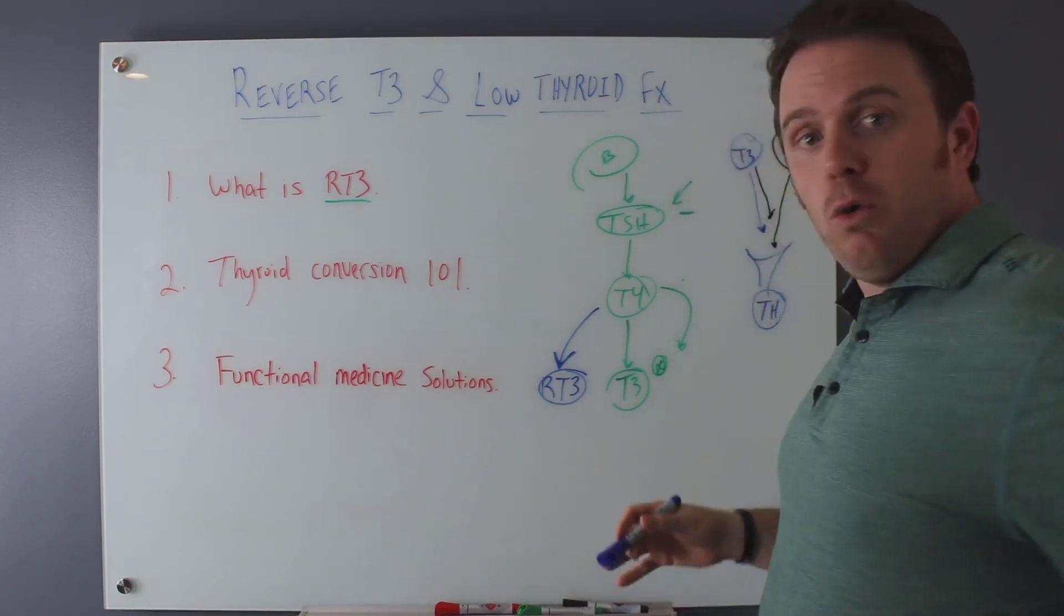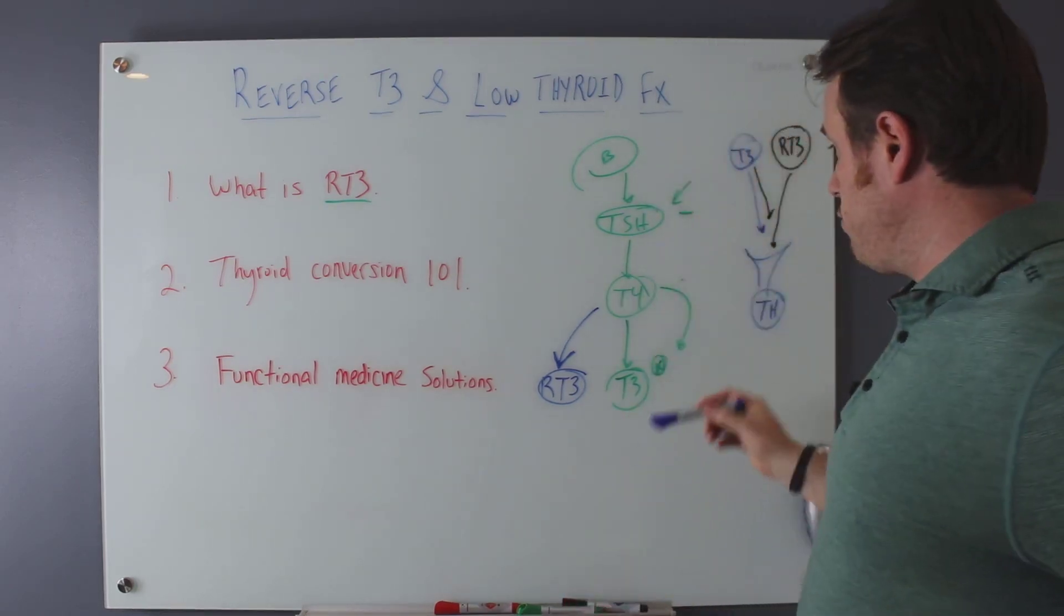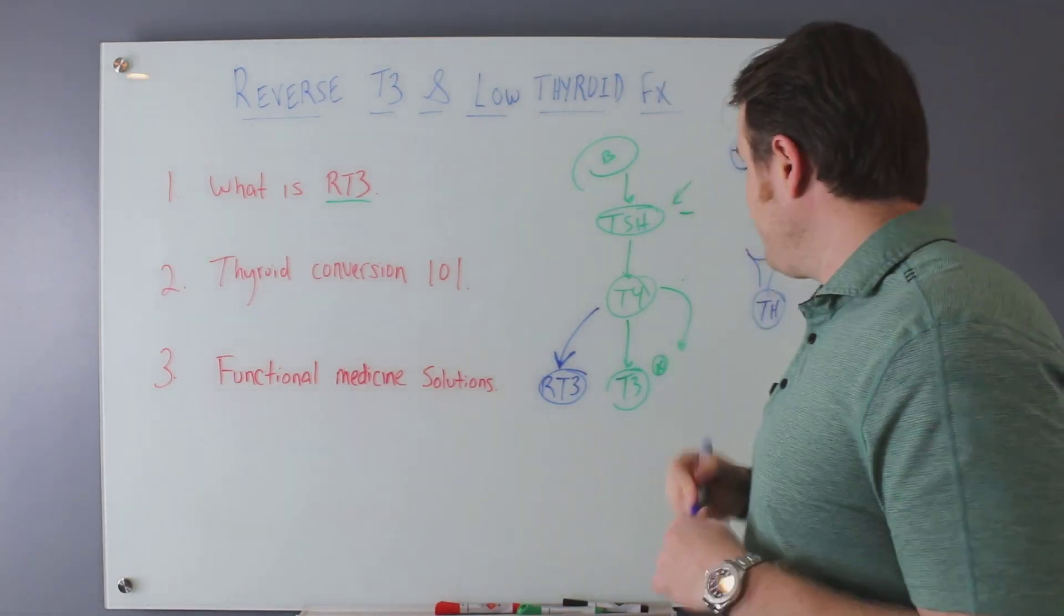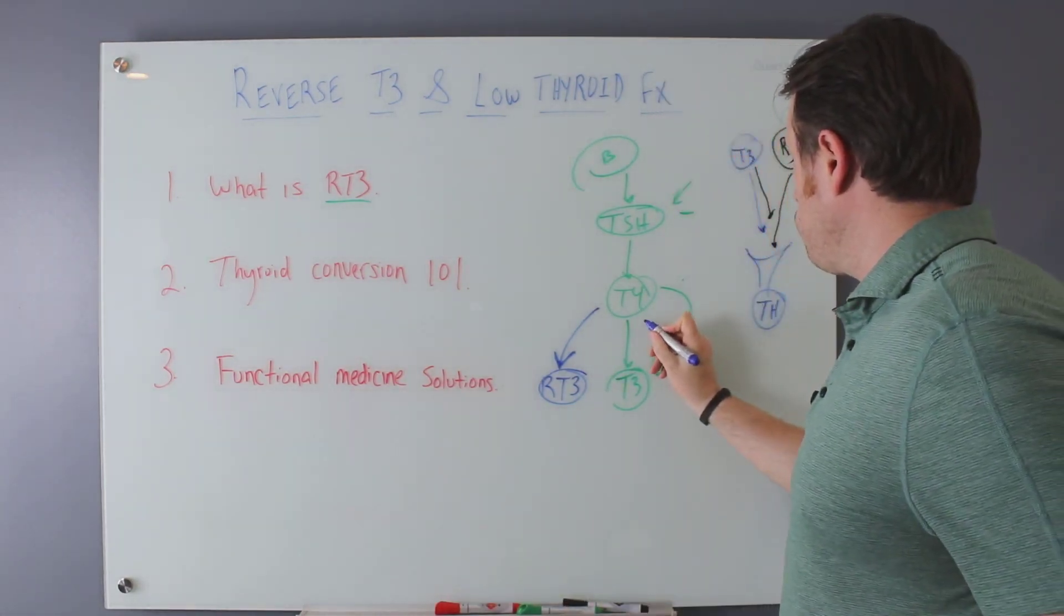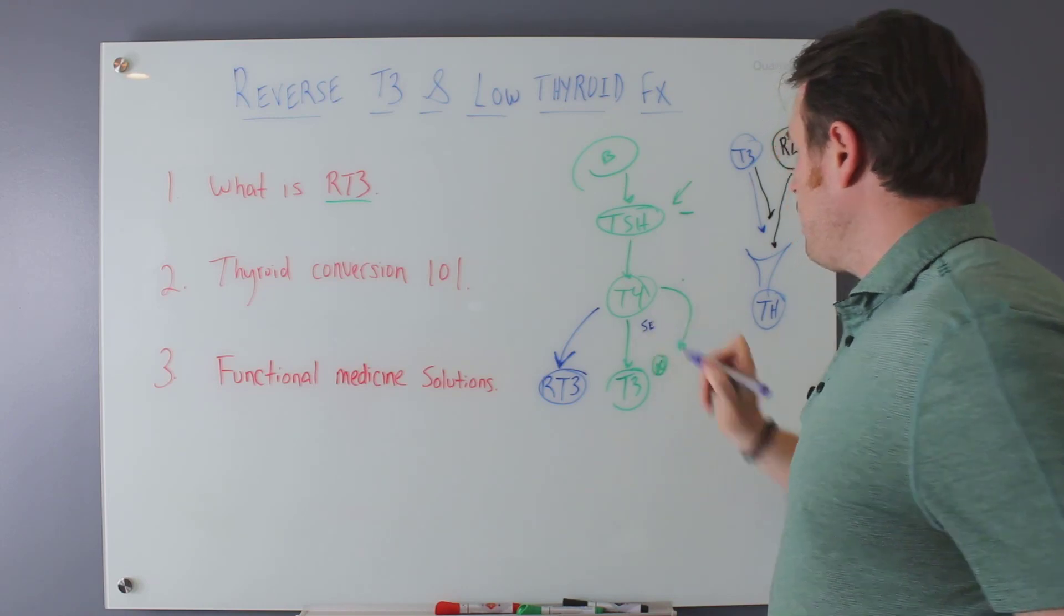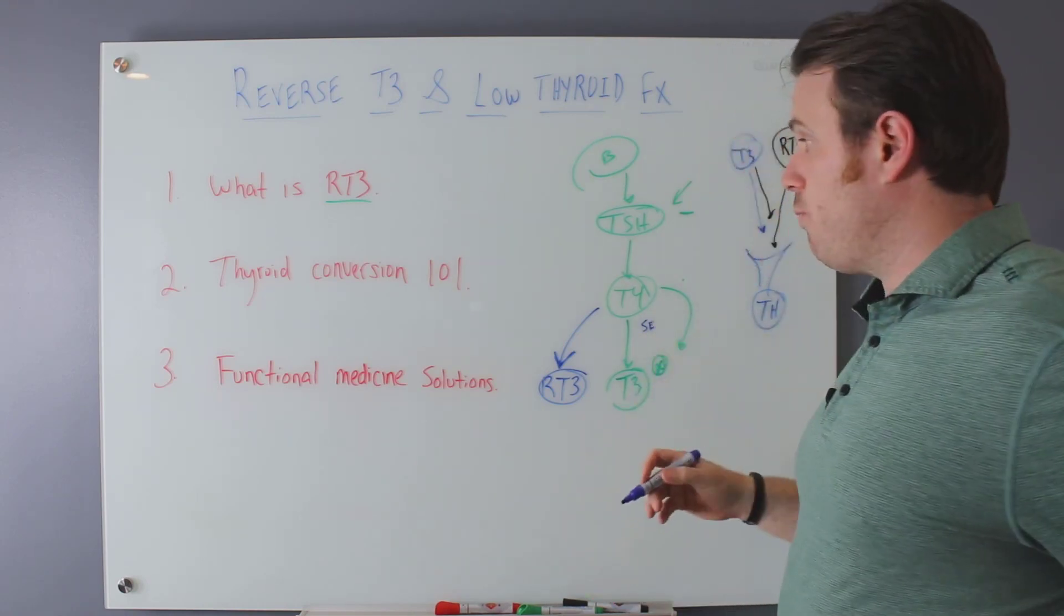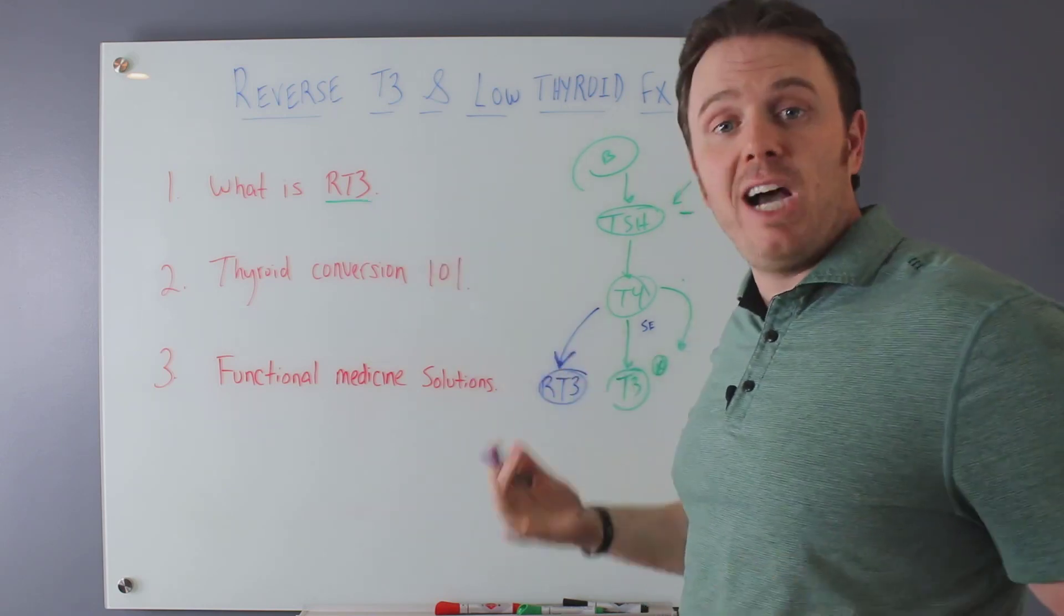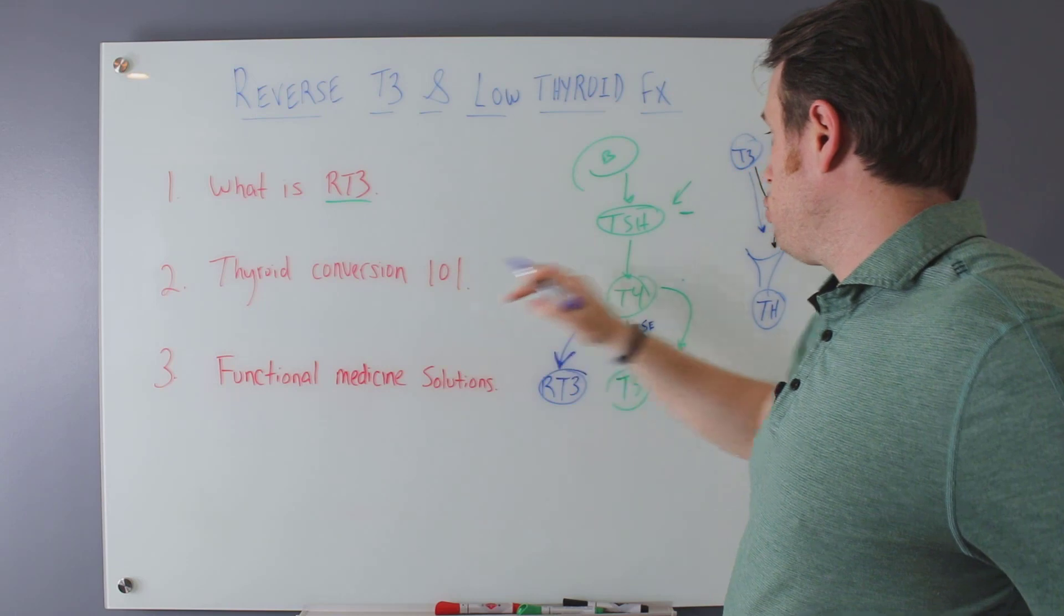Now, in general, we have this pathway that's happening here. There's a couple of things that are important that can affect reverse T3. Number one, selenium. So selenium is really important with thyroid conversion. And it's also important for decreasing reverse T3. So reverse T3 is inactive thyroid hormone, thyroid conversion 101.